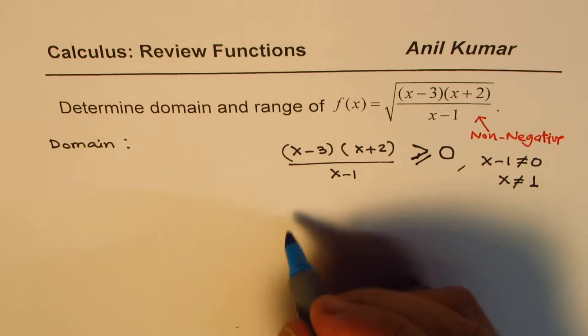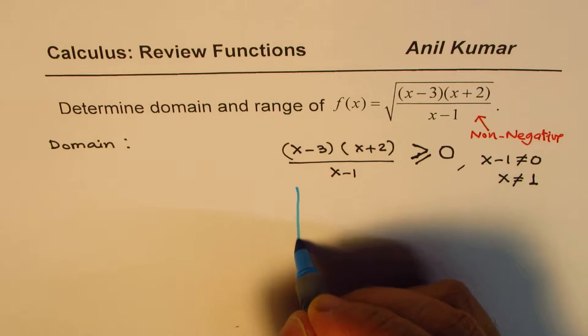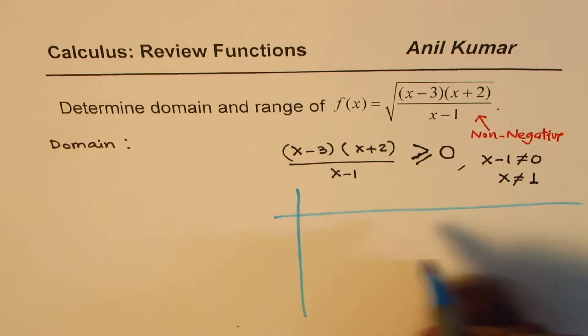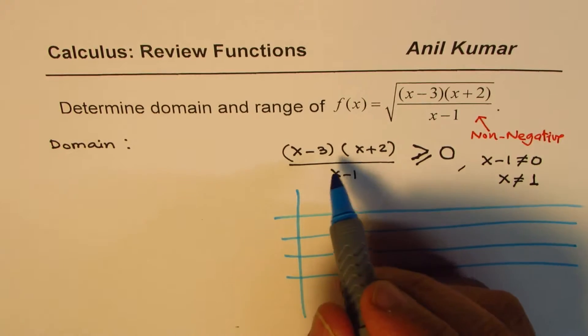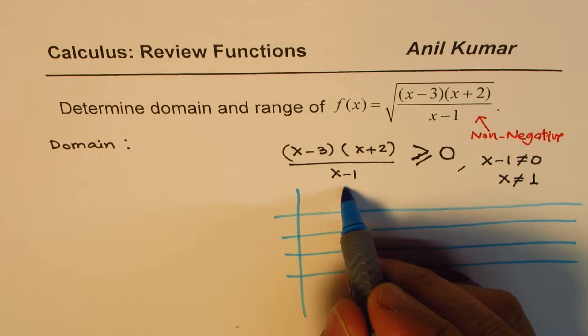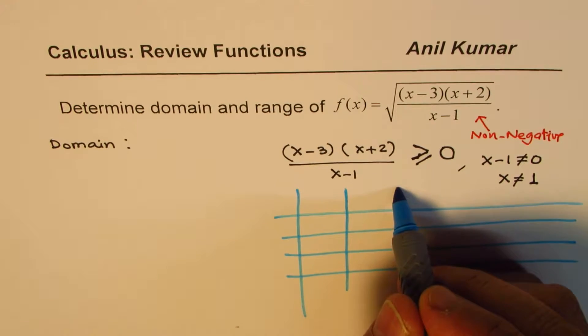We can solve for this looking into the intervals. So now we will analyze the intervals using some values. So what do we notice here is that we get zeros of numerator and denominator at 3, minus 2, and 1. So we will analyze the intervals which are formed because of those zeros. So I am just creating a table to do the same.